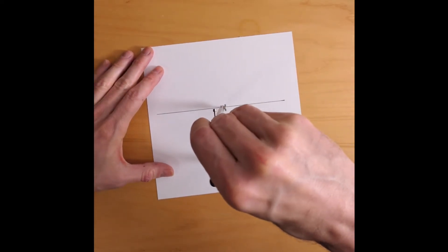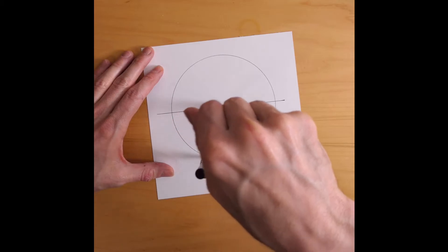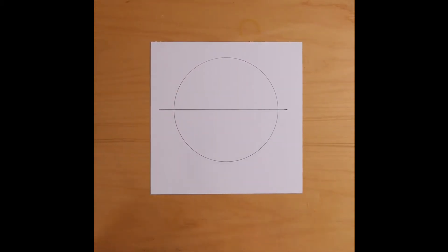All right. Now, one nice property of this construction is that the pentagon is going to be inscribed in the circle. That means that the five points of the pentagon will all lie on that circle.